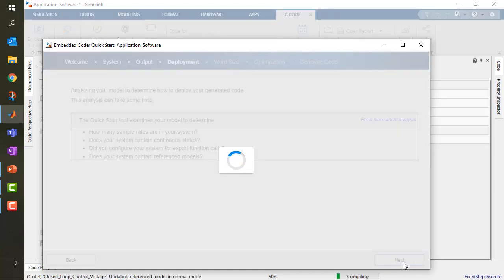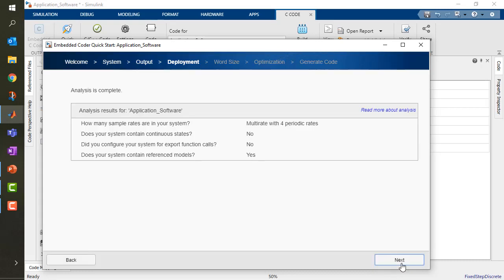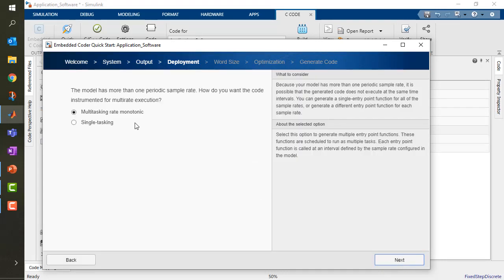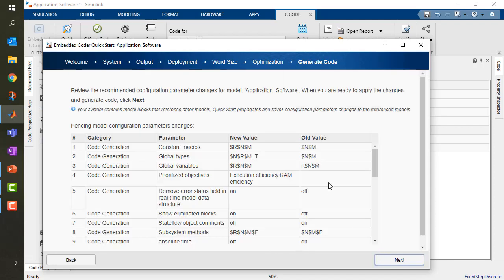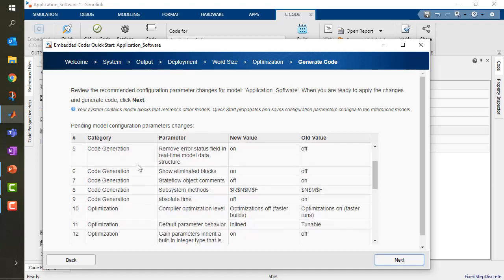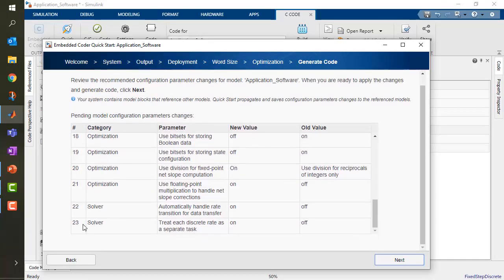I'm going to analyze the model, see how many sample rates are in our system, if there are any continuous states that can be implemented, and in the end it's going to ask me if I want this to be a multitasking rate monotonic system, or if I have a single tasking with the fastest execution time, what I want to prioritize, execution or RAM, and in the end it's going to suggest me some new value for my parameter on the code generation.